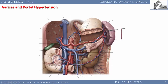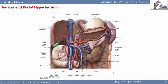Blood backs up through all the venous channels, creating large dilated veins in the esophagus — esophageal varices — and dilated veins around the stomach — gastric varices. The spleen enlarges to two or three times normal size. Here we see the celiac axis, the tortuous splenic artery resembling a pig's tail on CT, the left gastric artery, and the hepatic portal vein.